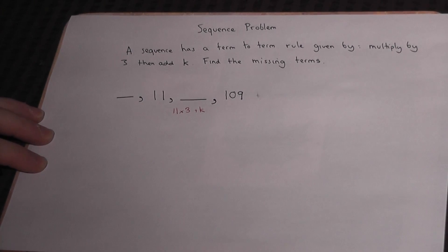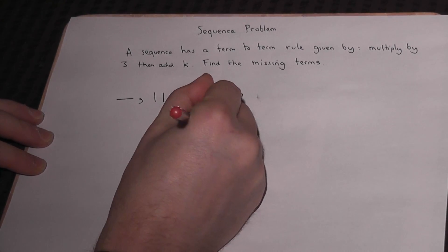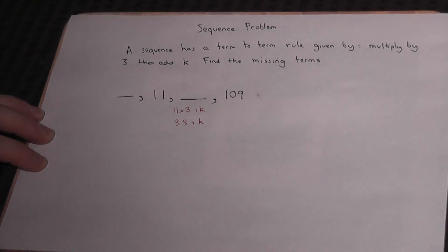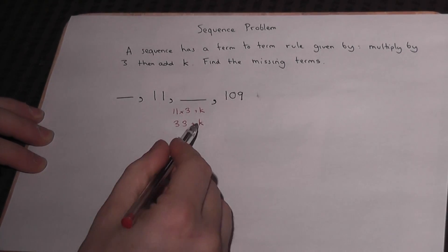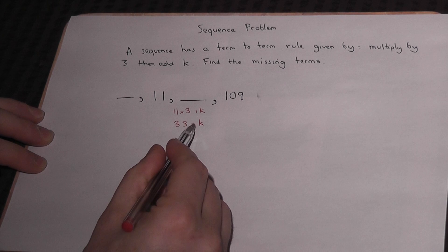Well, 11 times 3 is 33, then add on k. k is still unknown, but this term here in terms of k is 33 plus k.